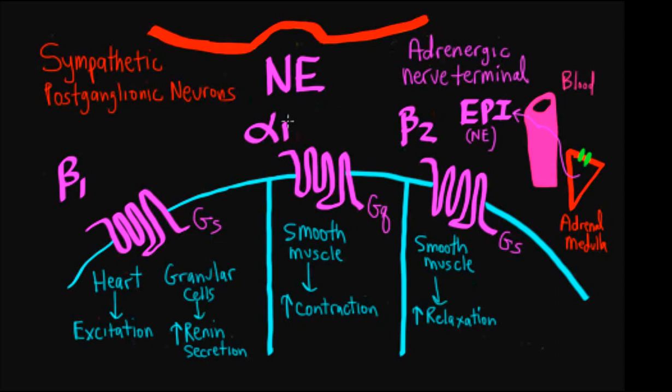Once we're done thinking about beta-1s, now we have two other receptors that are left. We have alpha-1s and we have beta-2s. And the way to think about this is that the remaining effector organs of the sympathetic nervous system are smooth muscle. There's very little effect of sympathetic adrenergic on secretory glands. So if we're thinking about which receptor is going to be found on the smooth muscle, we have to think about, well, what G protein is it coupled to?